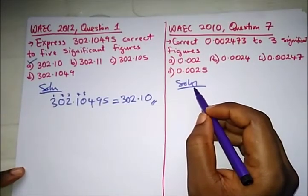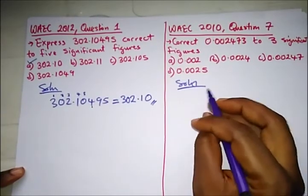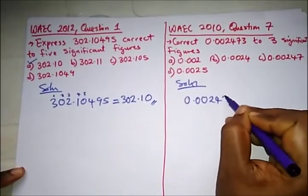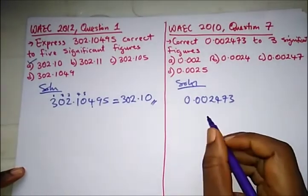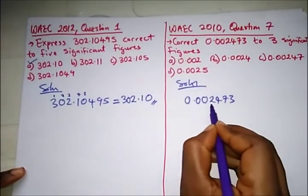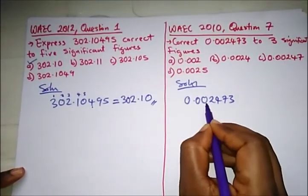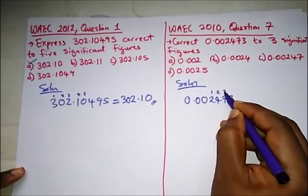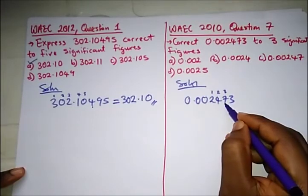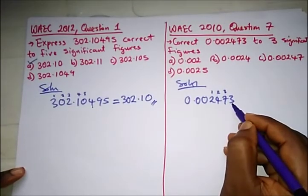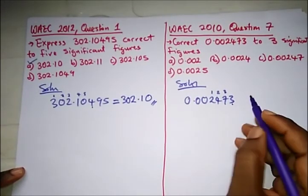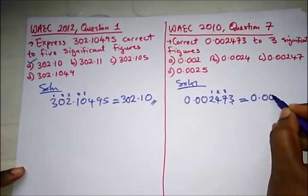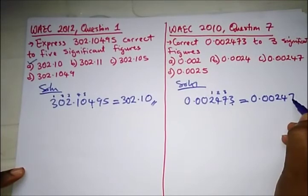Now WAEC 2010 question seven says: correct 0.0024732 to three significant figures. Let's write this down. For three significant figures we start from the non-zero value — these leading zeros don't count. We start from here: one, two, three. The next value after the third significant figure is three — it can't be rounded up, so our answer is 0.00247.